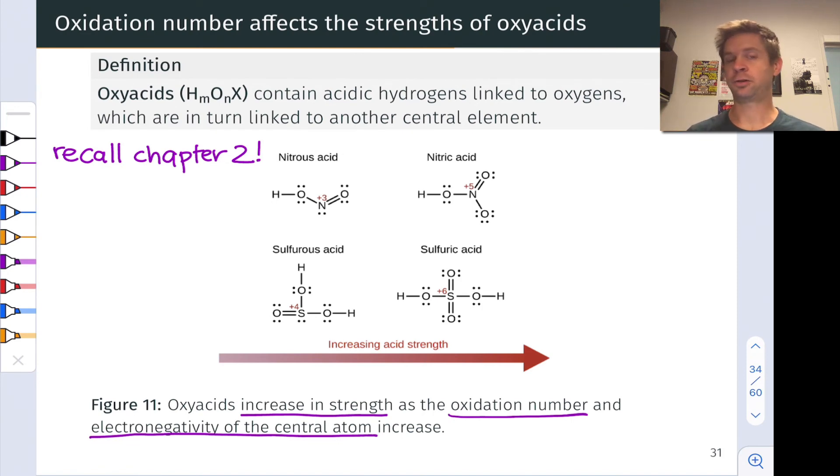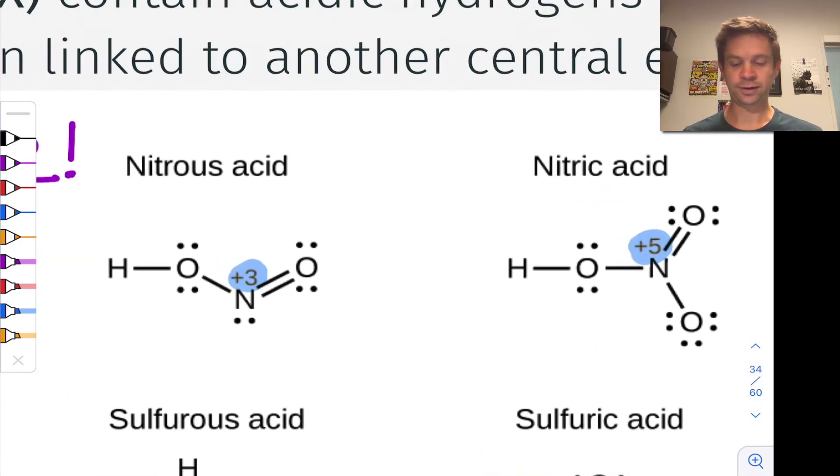The oxidation number at the central atom also matters. And the upshot here is that the more oxygens there are attached to the central atom, the stronger the acid is. So we can compare, for example, nitrous acid and nitric acid. Nitrous acid has a central nitrogen with an oxidation number of plus three, because that nitrogen has three bonds to more electronegative oxygen atoms. Nitric acid has an additional oxygen atom. And taking into account formal charges, that central nitrogen is formally positive and this oxygen formally negative, as well as the additional bond to oxygen, we find that the oxidation number of nitrogen in nitric acid is plus five. That greater oxidation number is associated with stronger acidity.